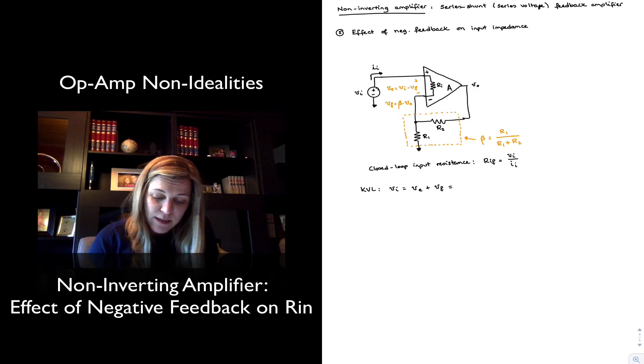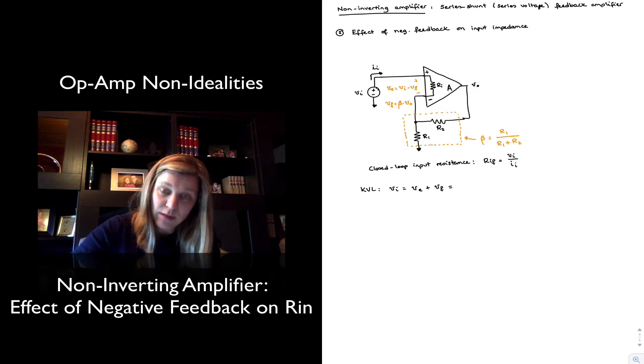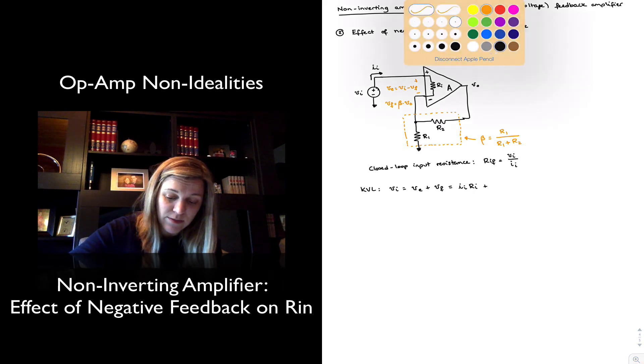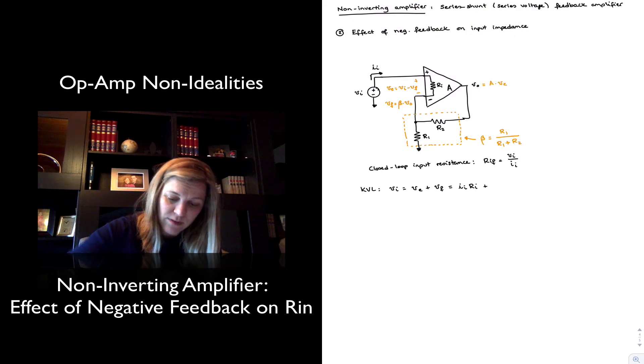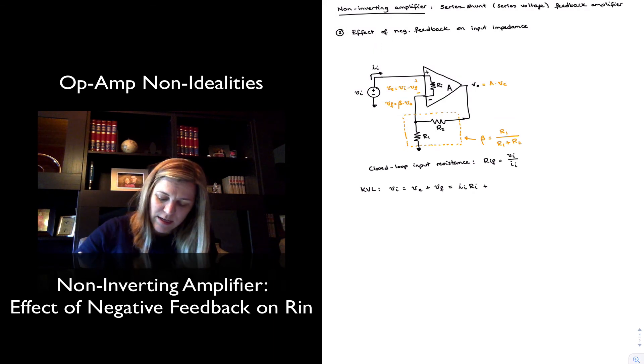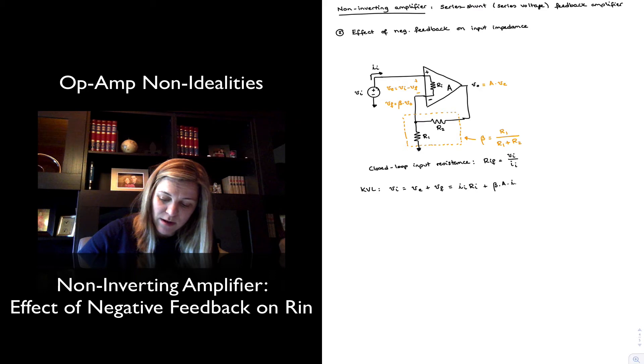I can express v sub e as iin times ri. That will be the input current times ri, the input resistance of the op amp as labeled in that figure. So iin times ri for ve. And then vf is going to be beta times v out, and v out is itself equal to a times ve. So vf is beta times a times ve. And ve we just said is equal to ii times ri, so beta times a times ii times ri.